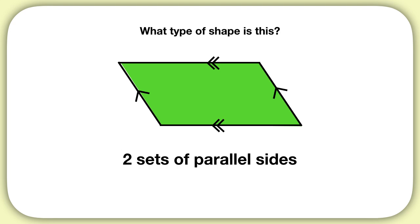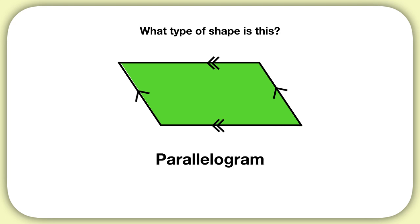So this shape only has two sets of parallel sides. What can we call this shape? Remember, when a shape only has two sets of parallel sides, it's just called a parallelogram.